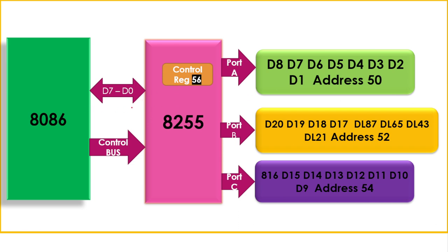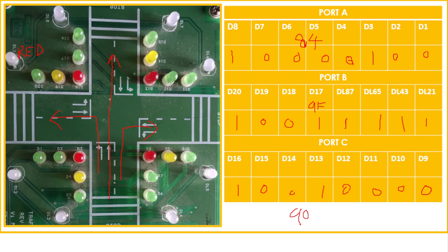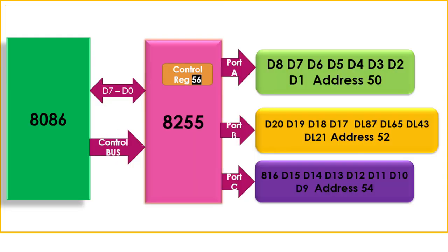Looking at the hardware architecture: the microprocessor is connected to the 8255 via data lines and control bus. The 8255 then drives 8 LEDs on Port A, 8 on Port B, and 8 on Port C. The 8255 has an internal control register and three ports. The port addresses are: Port A = 50h, Port B = 52h, Port C = 54h, and the control register = 56h. These addresses are fixed based on how VI Micro Systems has connected the hardware.